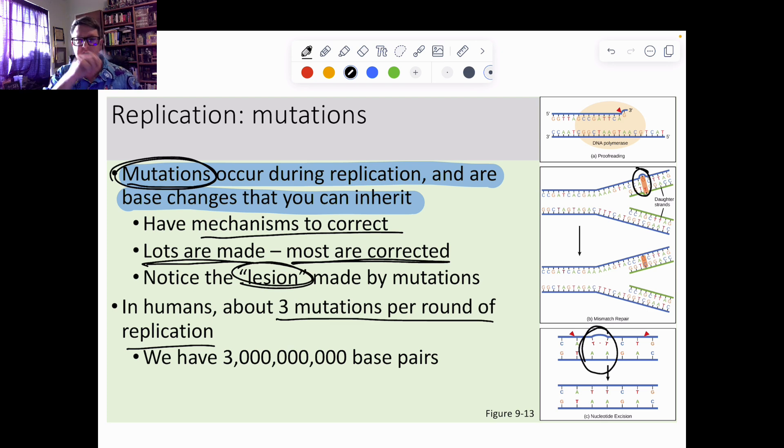What we tend to see is we make about three mutations per round of replication, meaning we replicate all of our DNA, we make a whole bunch of mistakes, we fix the mistakes, and of all those, three make it through. Since we have three billion base pairs, it's literally a one in a billion mistake, which is pretty good.